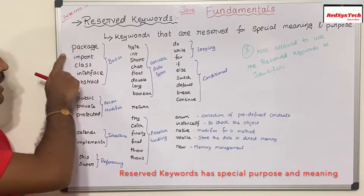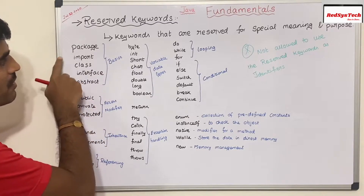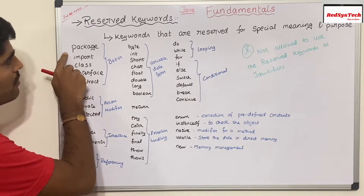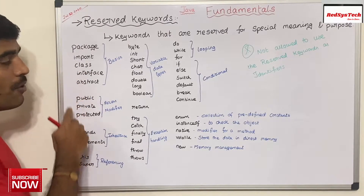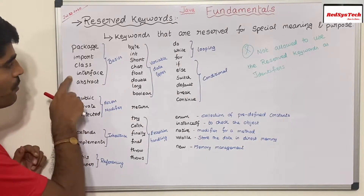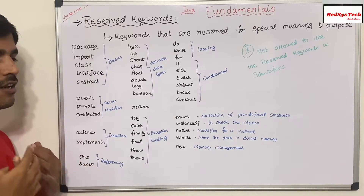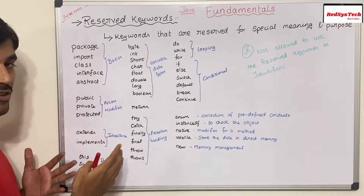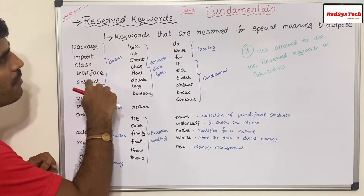So let's say I have a package. Let me go quickly about all these keywords. So there is a keyword called package — if you want to create any package, as we explained in our previous videos, we can use the keyword 'package'. If you want to import the package, use 'import'. If you want to write any class, define it as 'class'. For an interface, use 'interface' and 'abstract'. Abstract means if I want to create any class as abstract or define any methods as abstract. These are the basic reserved keywords in Java.